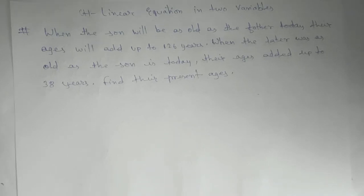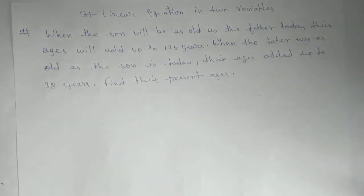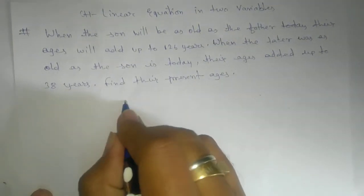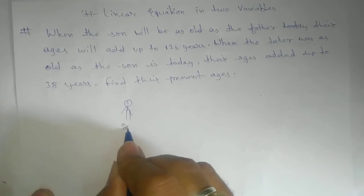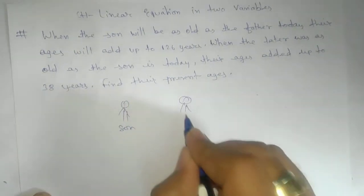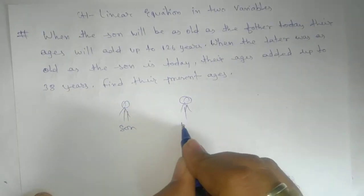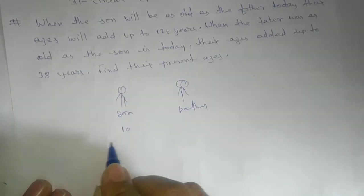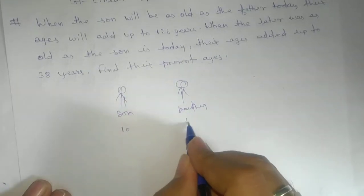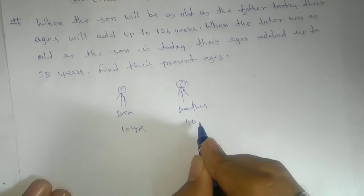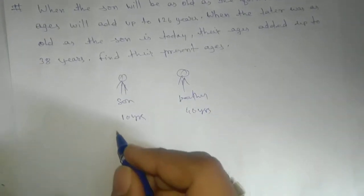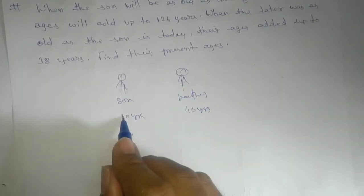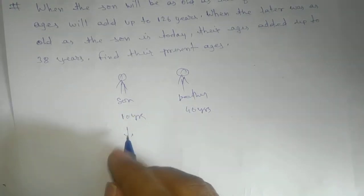Let's try to understand with an example and then we'll proceed with the problem. Think of this as your son and this as the father. If the son's age is 10 and the father's age is 40 years, they are saying that when the son will become 40 years old...